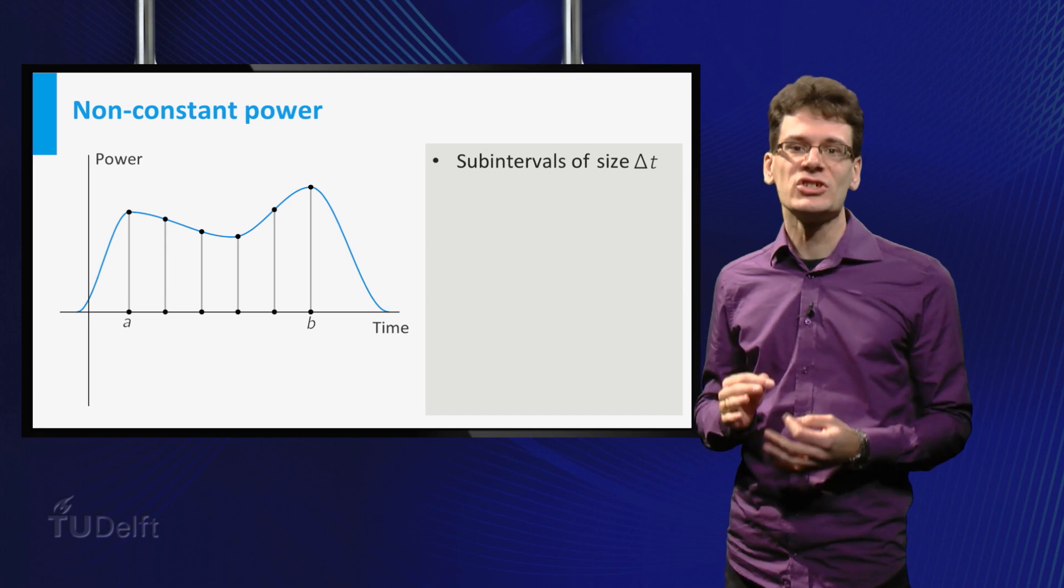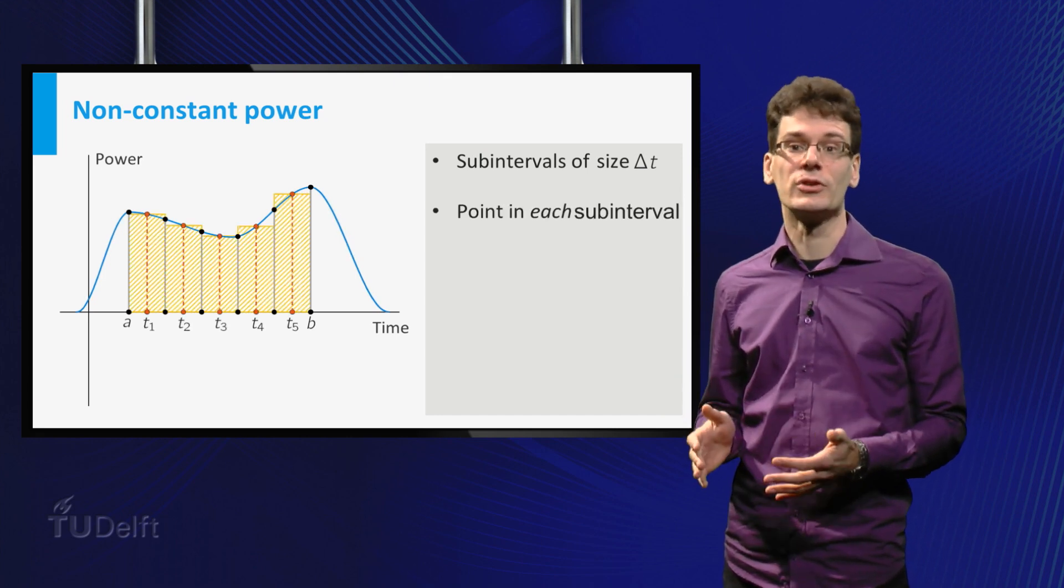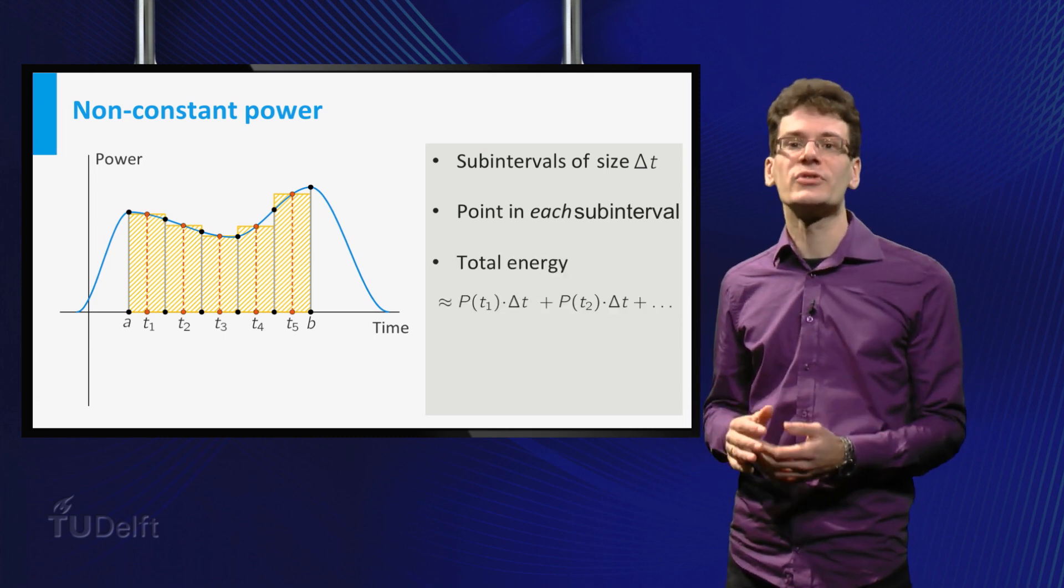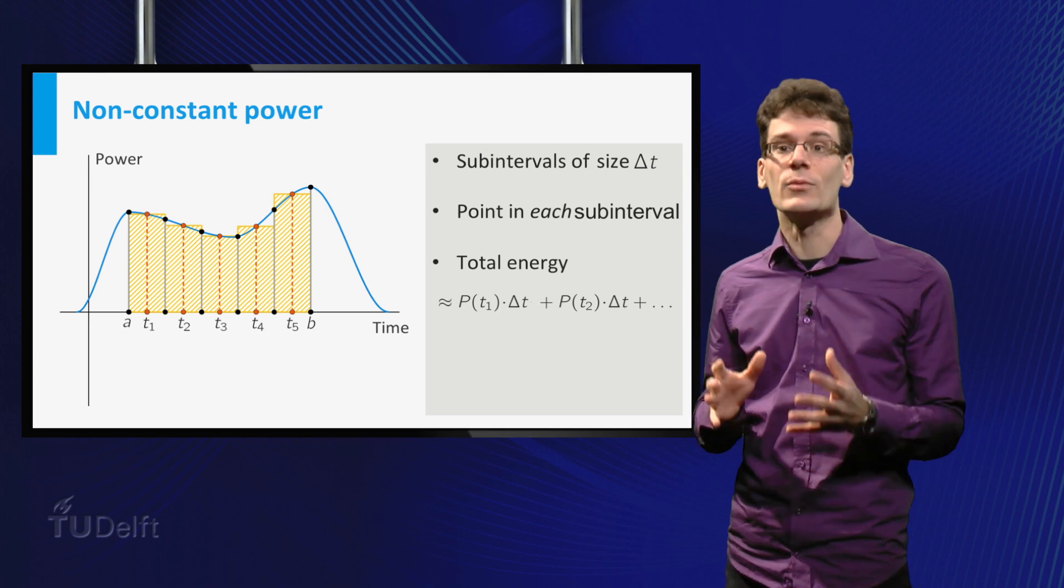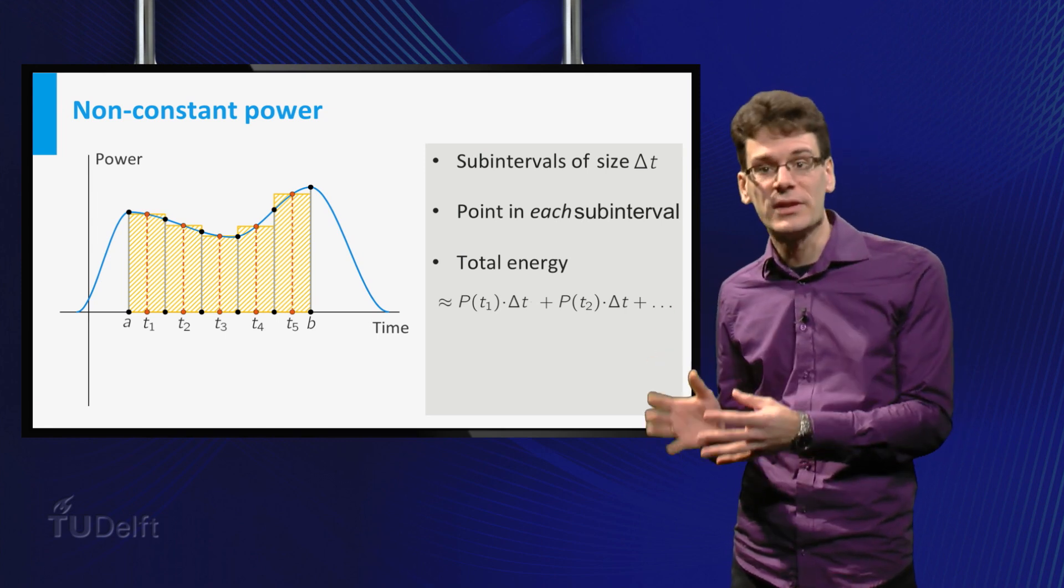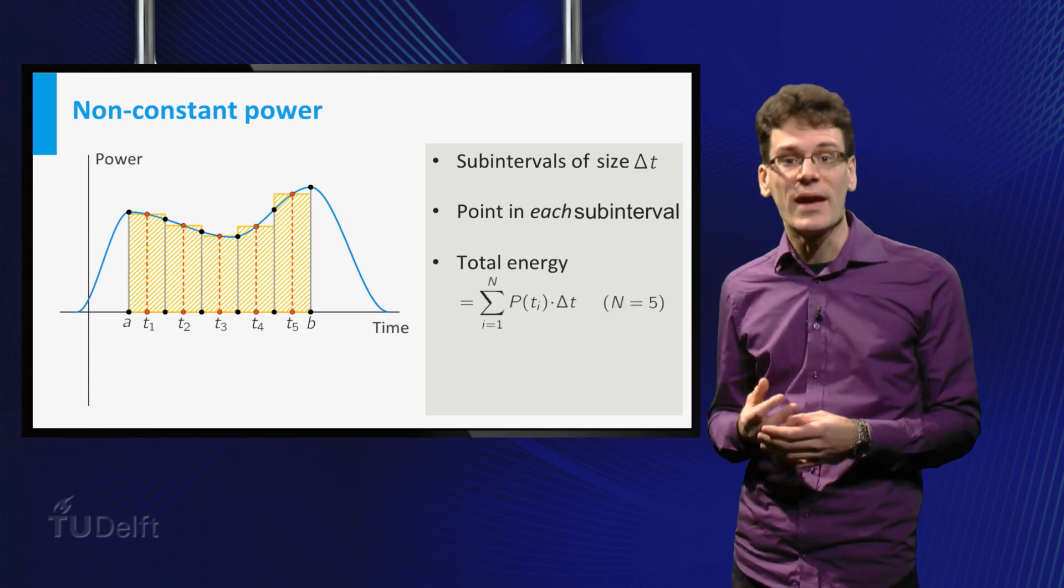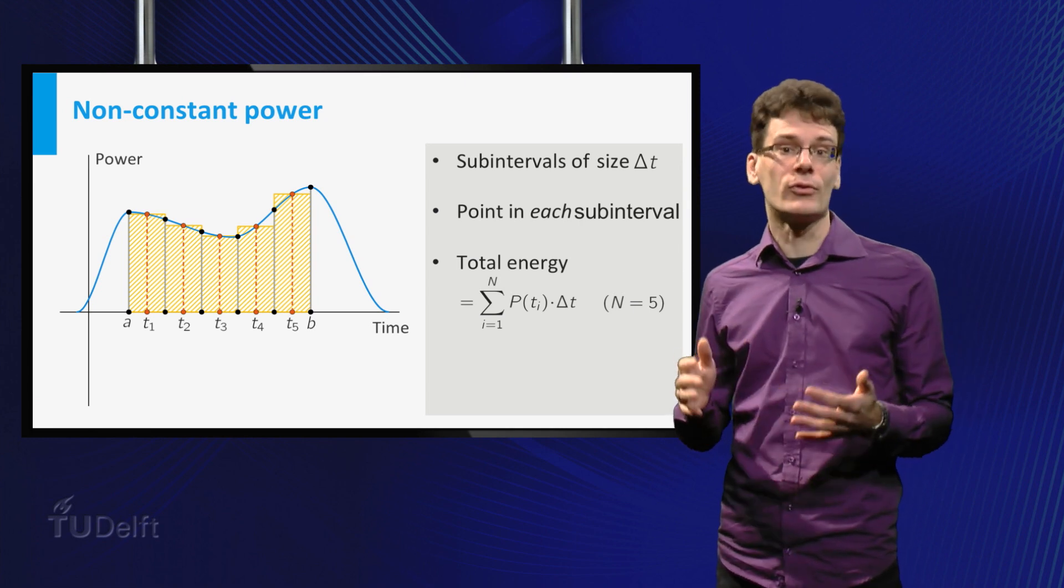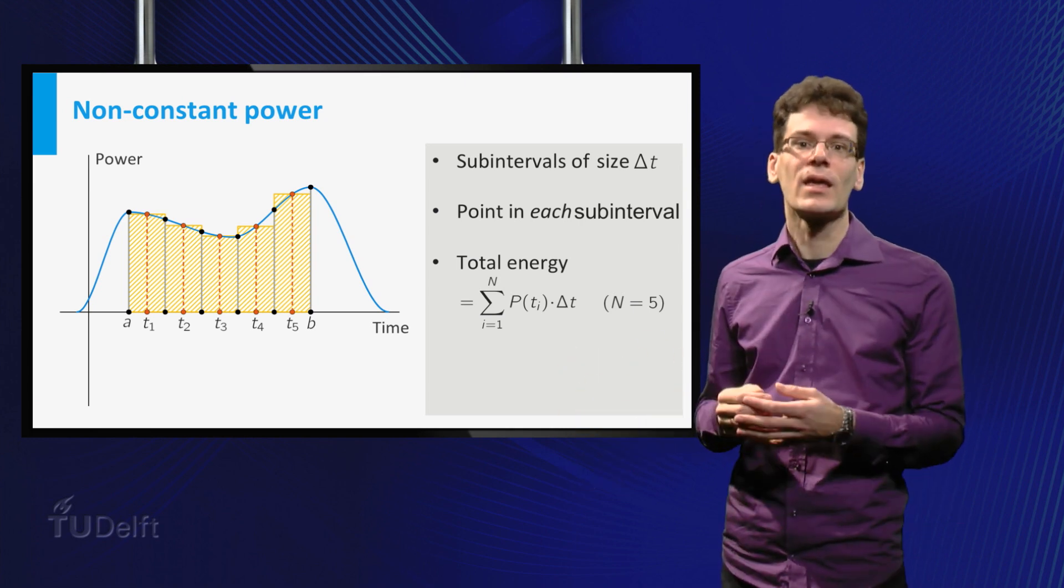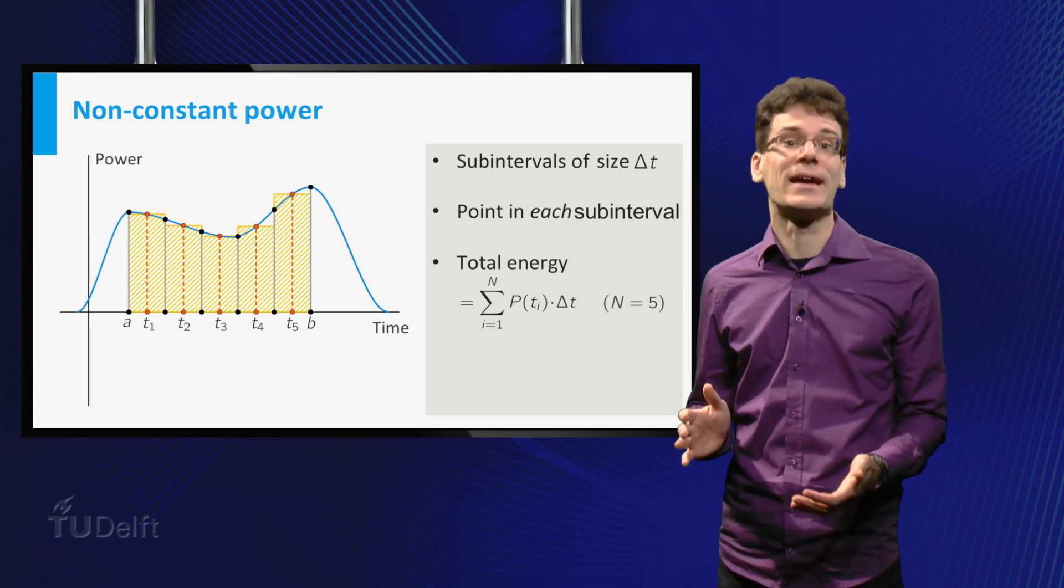This we can repeat for each interval: choose a point and approximate the energy consumption. The total energy consumption is then approximated by the sum of all contributions, P(t1) times delta T plus P(t2) times delta T, etc. We can use the summation sign to denote this sum more compactly; here n is the number of subintervals, in this case 5. The sum can be graphically represented by the total area of the rectangles.